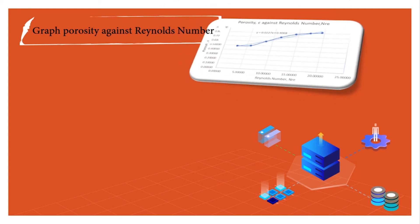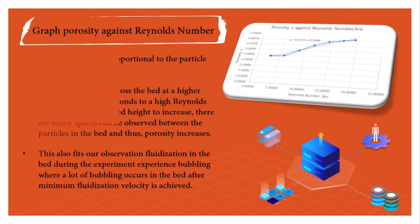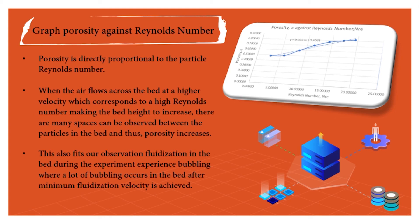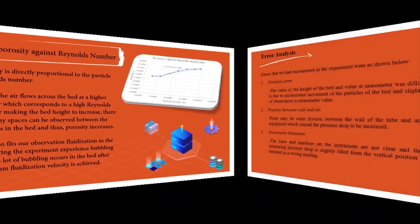From the graph of porosity against Reynolds number, the porosity of the bed and particle Reynolds number increase when the height of bed increases, because porosity is directly proportional to the particle Reynolds number. When air flows across the bed at higher velocity — corresponding to a higher Reynolds number — there are more spaces between the particles in the bed and thus porosity increases. This also fits our observation where fluidization in the bed appears inhomogeneous with a lot of bubbling occurring after the minimum fluidization velocity is achieved. To have homogeneous fluidization, the particle size of the bed should be made smaller.